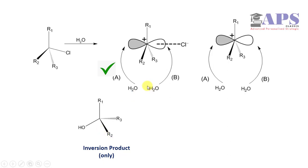Why is this inversion product? Because water approaches from the opposite side of chlorine. But water cannot approach from the right side because this side is shielded by chlorine. So this side is hindered in nature.